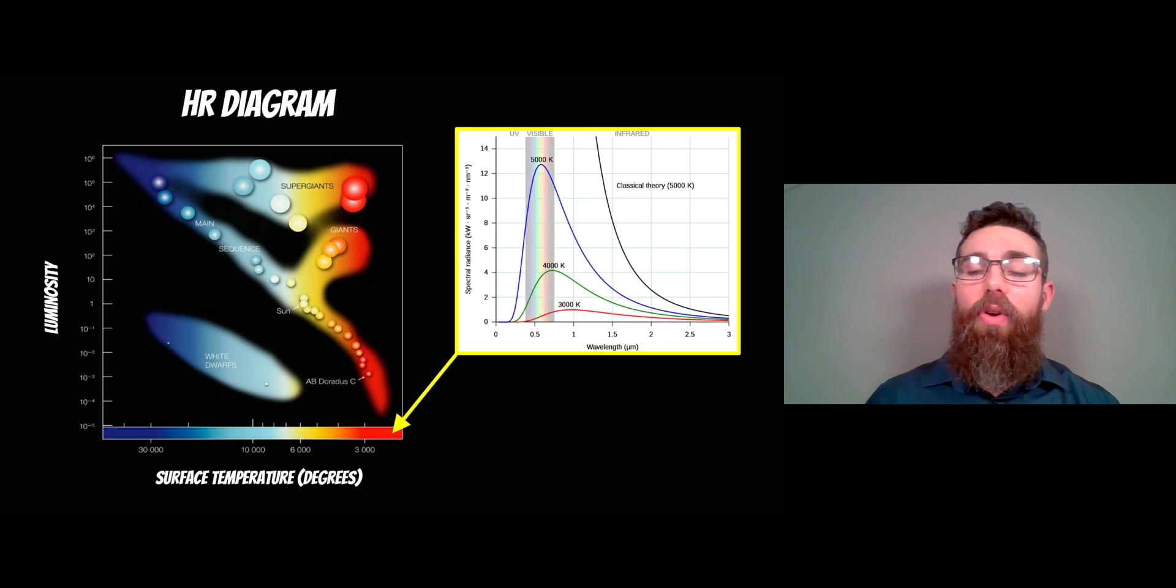So on the right hand side we've got the spectrum of a few different objects with different colors and you can see where they're peaking. So if it peaks at around about 3000 Kelvin it's going to have a reddish color as it moves more towards the left hand side it will go more yellowy white blue. So we can get that surface temperature fairly easily knowing how they behave.